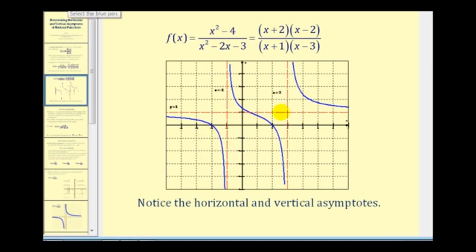One last thing to notice about the domain of this function is that since x equals negative one and x equals three would make the denominator equal to zero, we must exclude those two values from the domain.